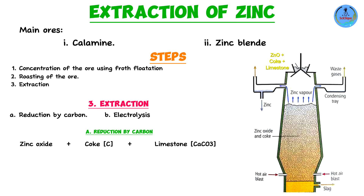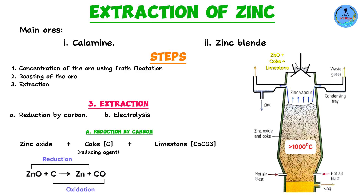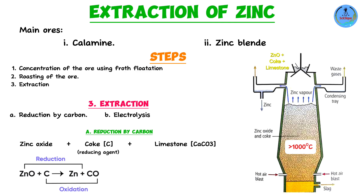These three components are fed into the furnace from the top, where temperatures exceed 1000°C. Carbon acts as a reducing agent — since carbon is more reactive than zinc, it reduces zinc oxide. In this reaction, carbon is oxidized while zinc oxide is reduced: ZnO + C → Zn + CO. The zinc is produced as zinc metal.